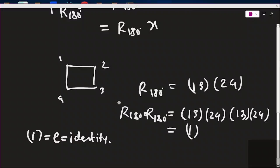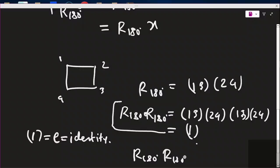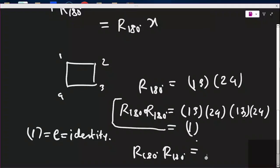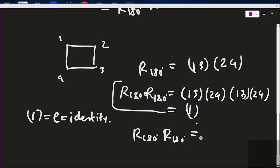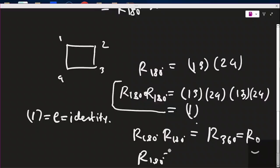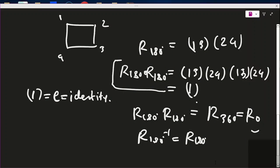So r180° · r180° = r360° = r0°, which is the identity. That means r180° is its own inverse: (r180°)⁻¹ = r180°.